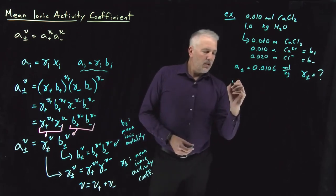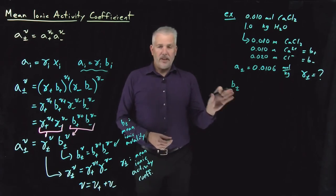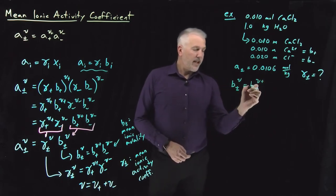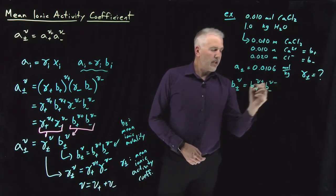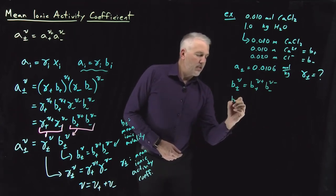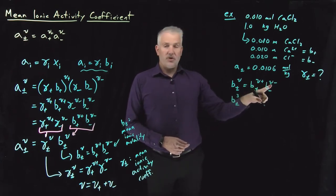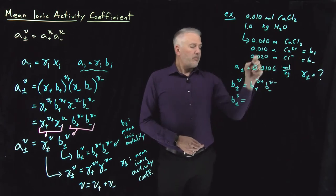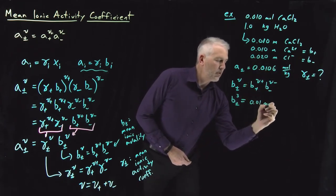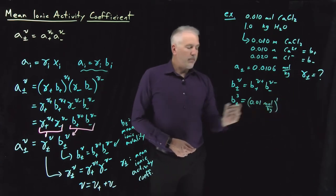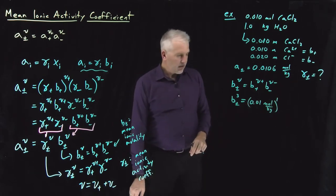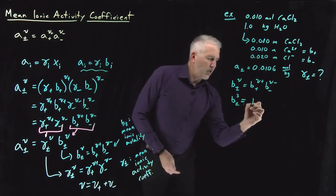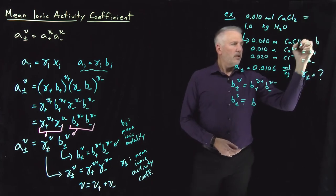The first step is to find the mean ionic molality. Going back to the definition, the mean ionic molality is the cation molality raised to its stoichiometric coefficient times the anion molality raised to its stoichiometric coefficient. In our case, the mean ionic molality cubed — because we have one cation and two anions, totaling three ions — equals the molality of the cation, 0.01, raised to the first power.